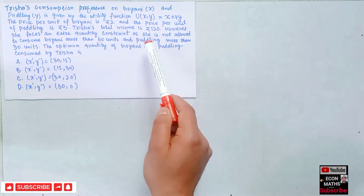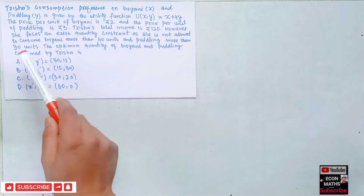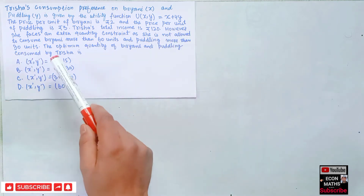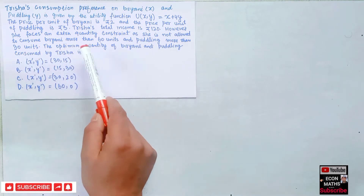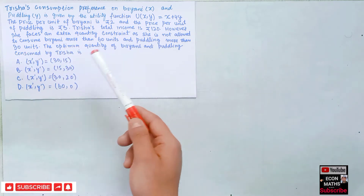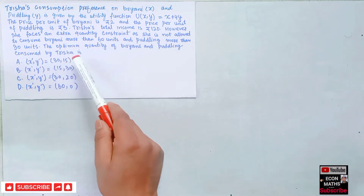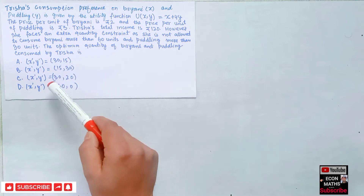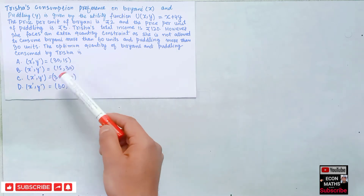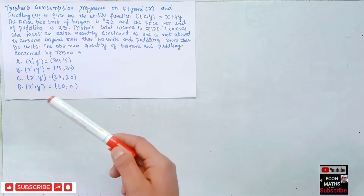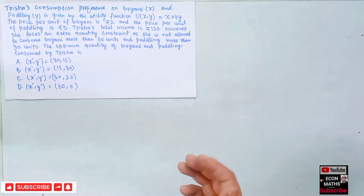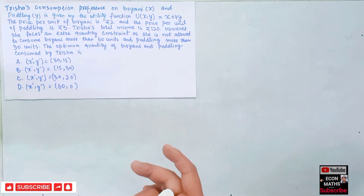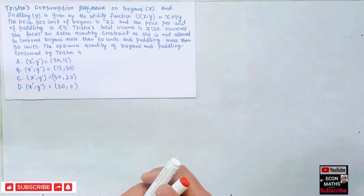She is also not allowed to consume more than 30 units of pudding. The optimum quantity of biryani and pudding consumed by Trisha is one of four options: (30,50), (50,30), (30,20), and (60,0). We have to determine which of these options is the optimum quantity for Trisha.